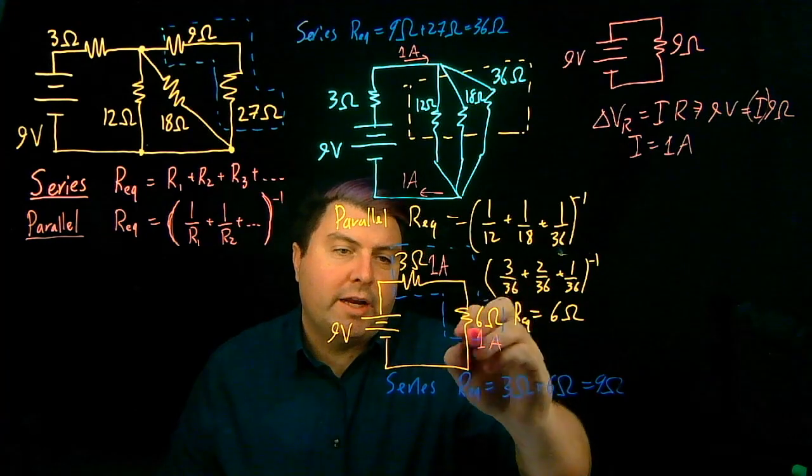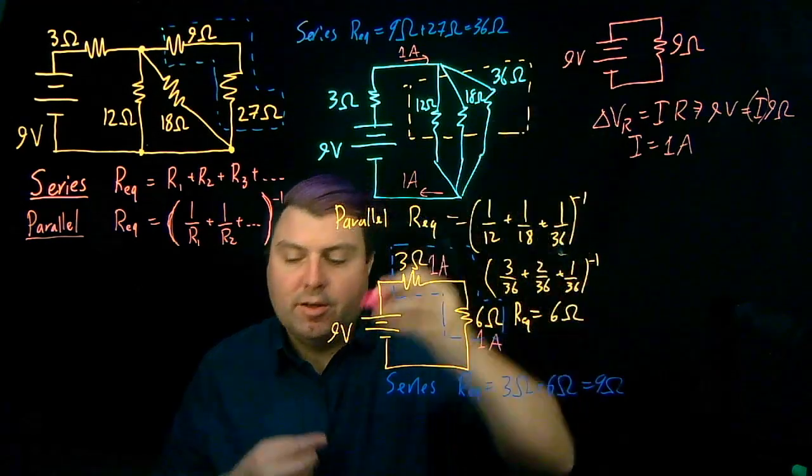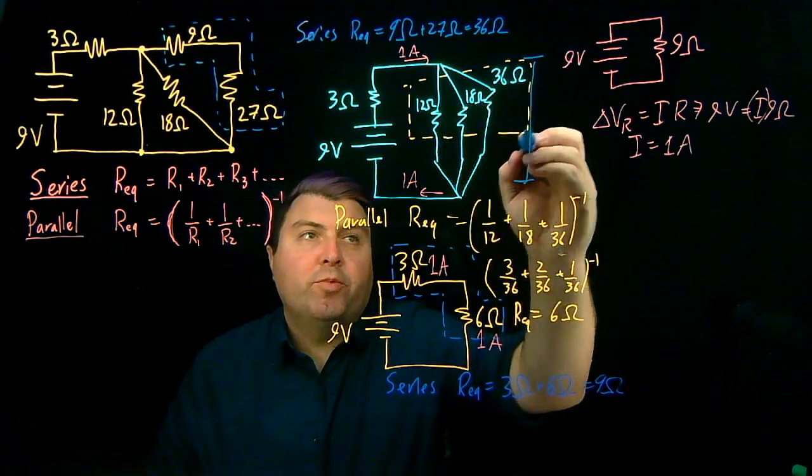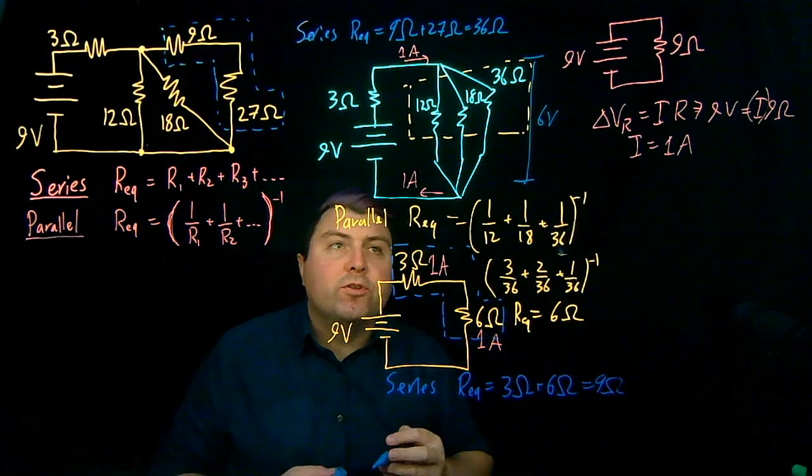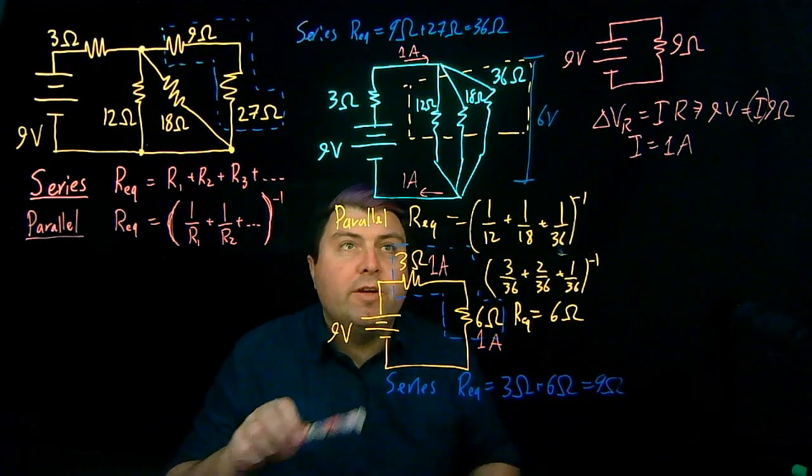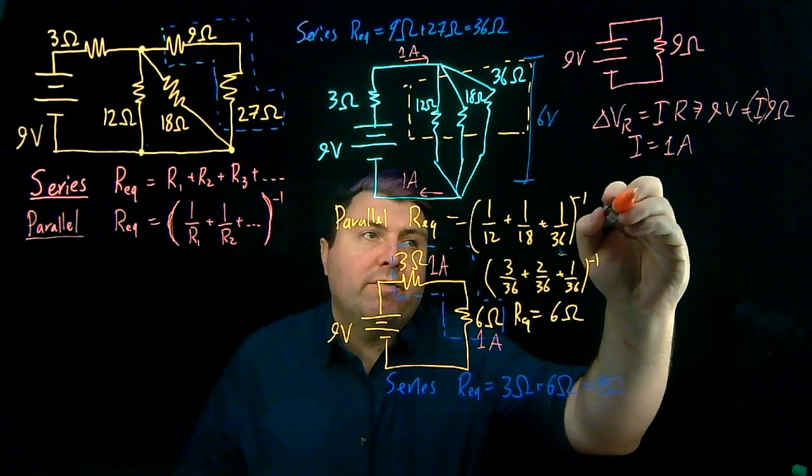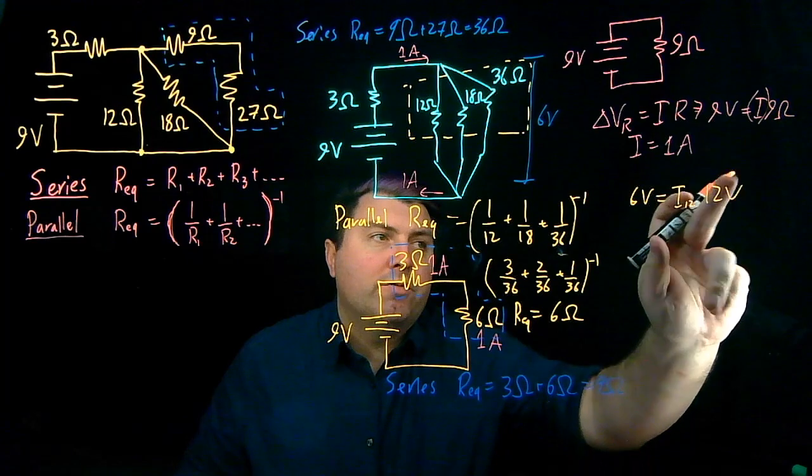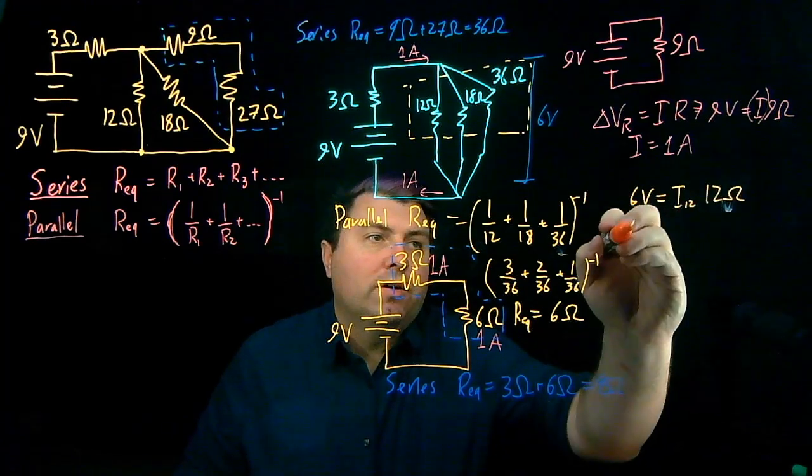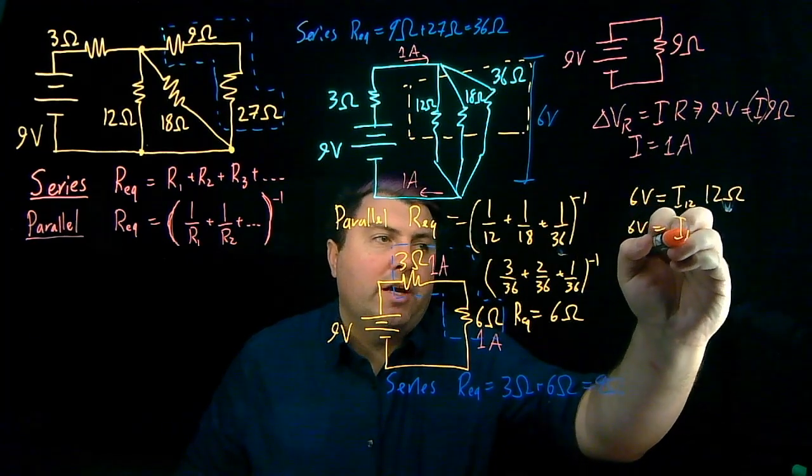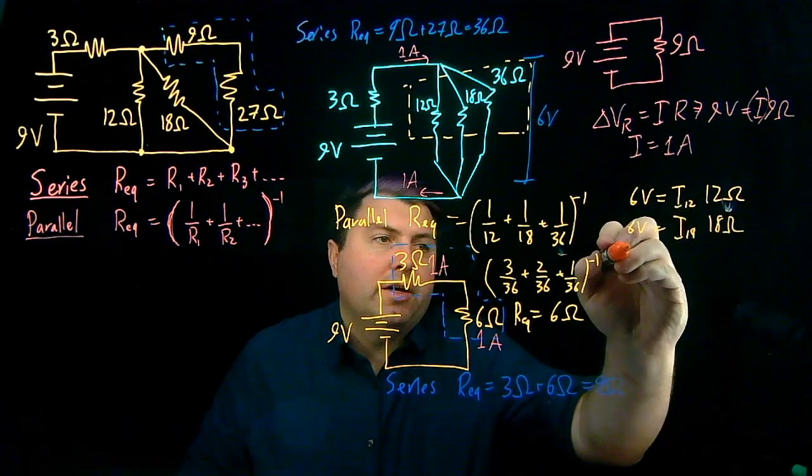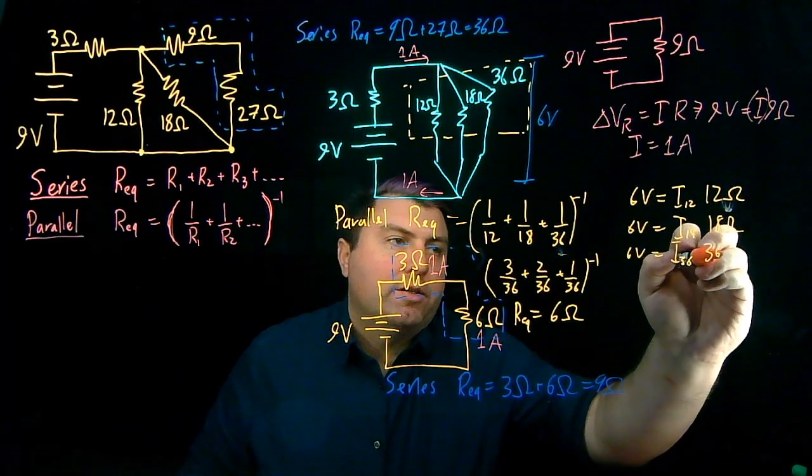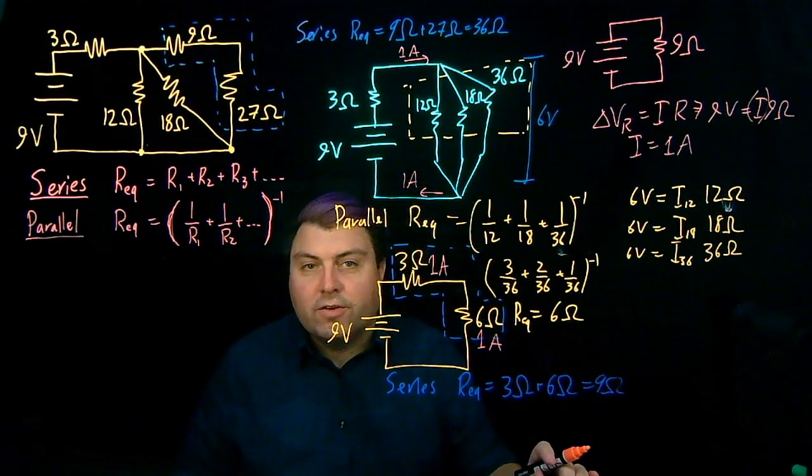We can also look, this 6 ohms times this 1 amp means that over this bridge, we have a voltage difference of 6 volts. So now we can find for each of these individually. We have 6 volts equals I over the 12 ohm times 12 ohms, 6 volts is equal to I over the 18 ohm times 18 ohms, and 6 volts is equal to I over the 36 ohms times 36 ohms.